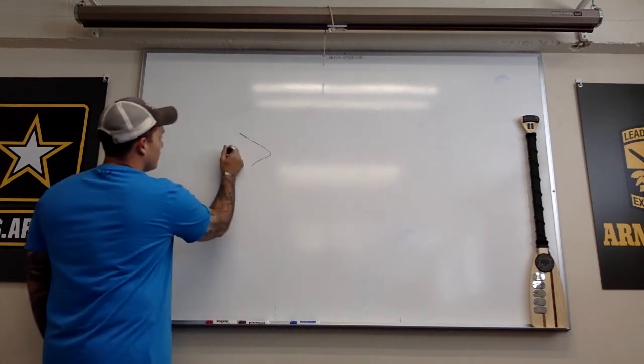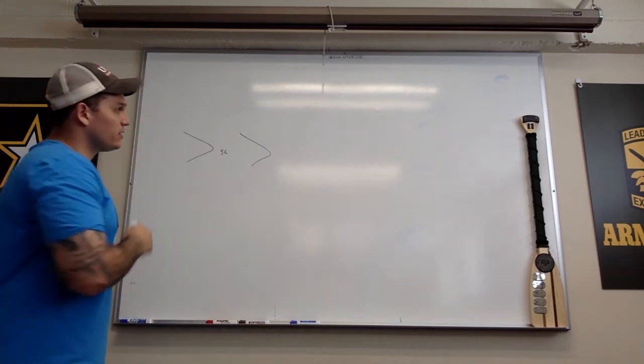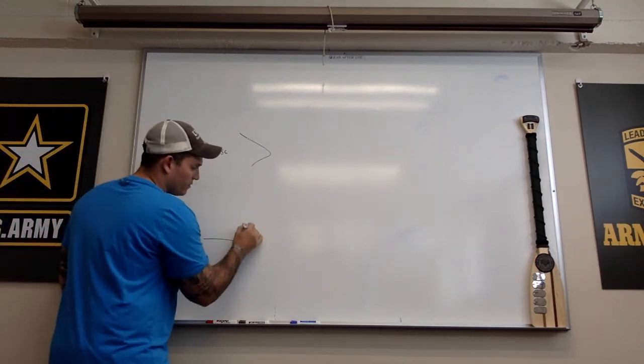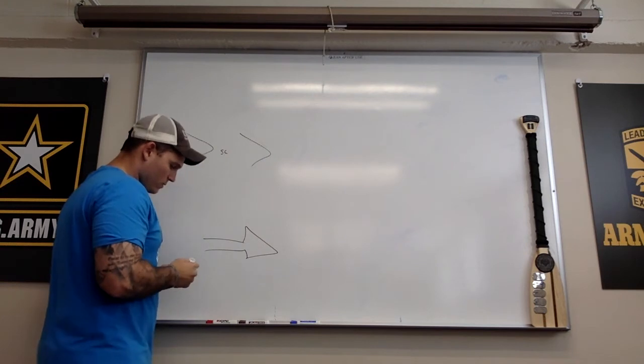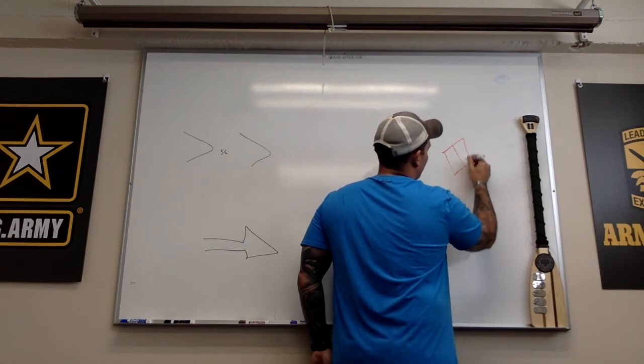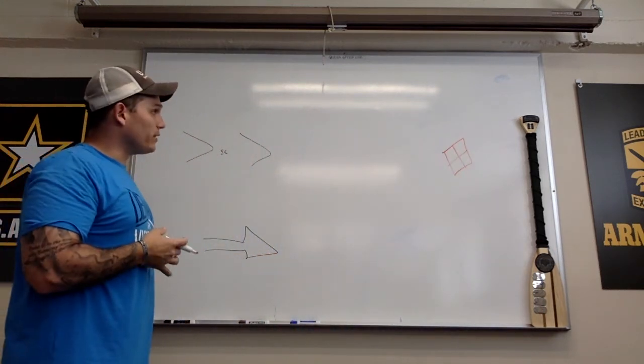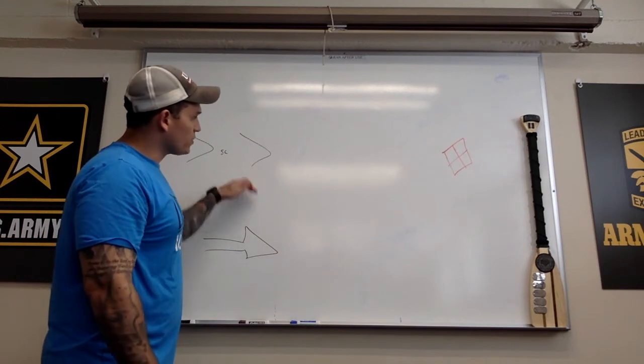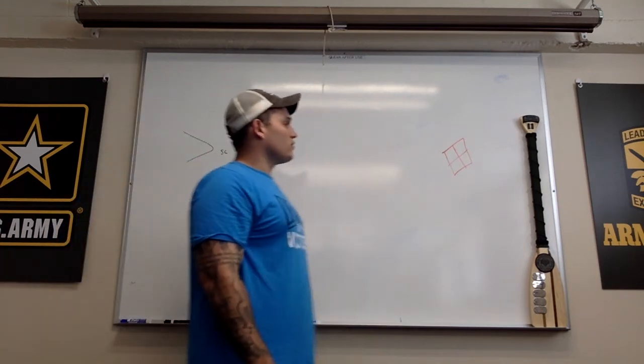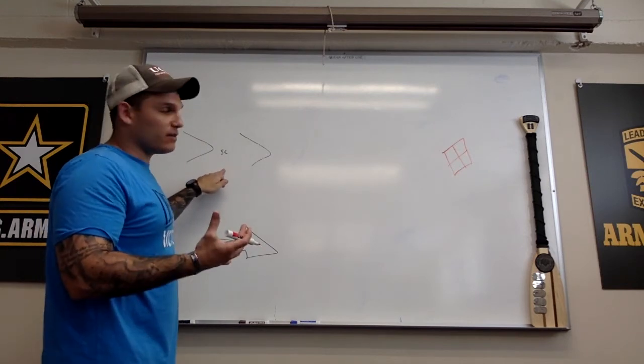If we're in our fire team wedge platoon column fire team wedge traveling in this direction, we have the enemy here. The odds that we fight in are three to one, so we have to have three friendly forces to every one enemy. We have nine members of our squad. A light infantry squad consists of nine members.